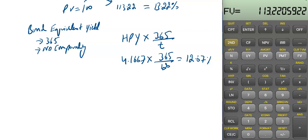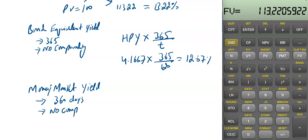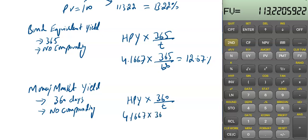Next is money market yield. Money market is a short-term market, and it always uses the 360-day convention without compounding. Money market yield is an annualized return of the holding period yield using 360 days. Formula: holding period yield × (360 / given period). So it is 4.1667 × (360/120) = 12.5%. That's how you calculate money market yield.